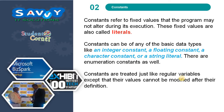The second topic is constants. Constants refer to fixed values that the program may not alter during its execution. These fixed values are also called literals. Constants can be of any of the basic data types — integer constant, floating constant, character constant, or string constant. There are enumeration constants as well. Constants are treated just like regular variables except that their values cannot be modified after their definition.